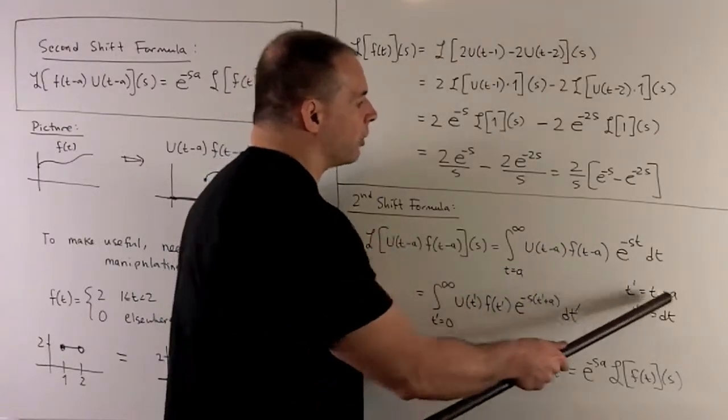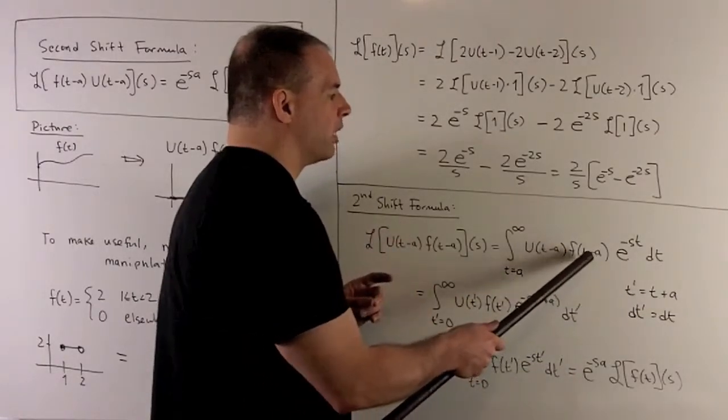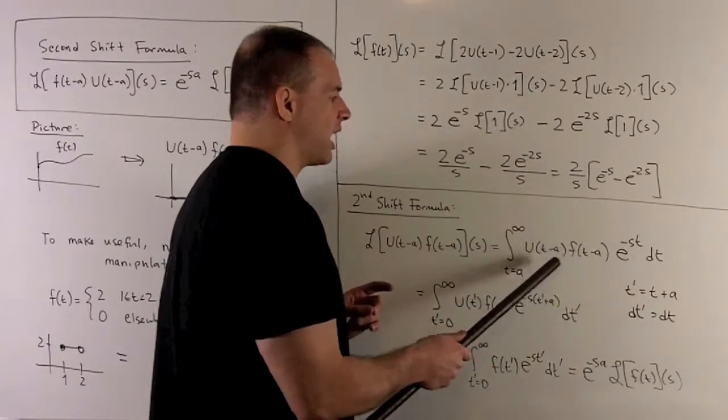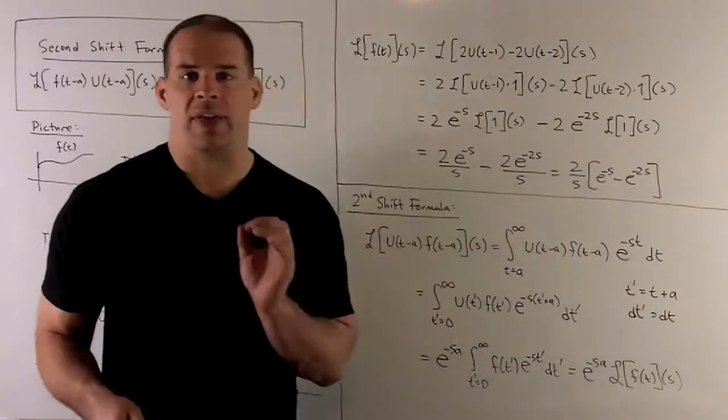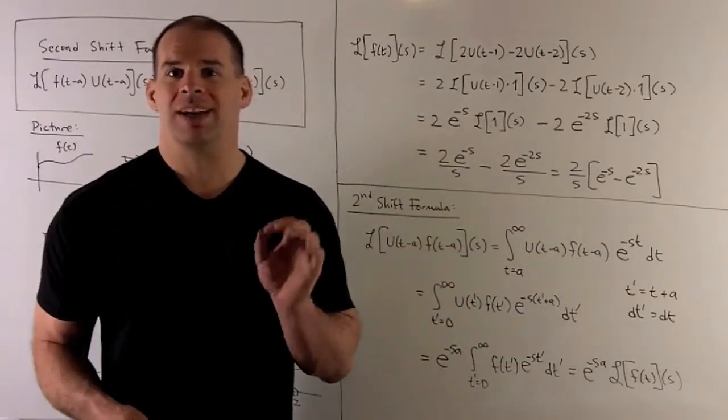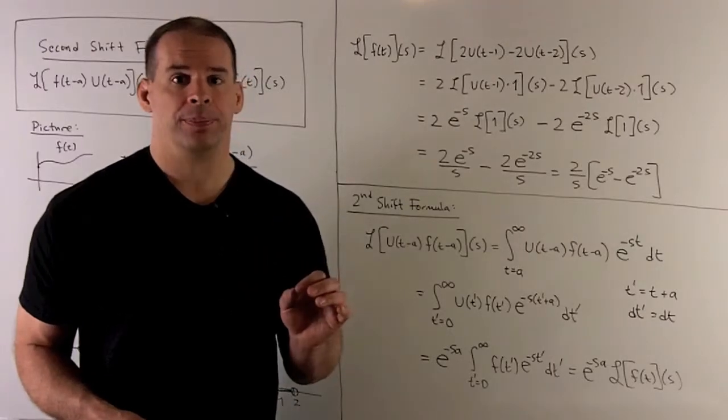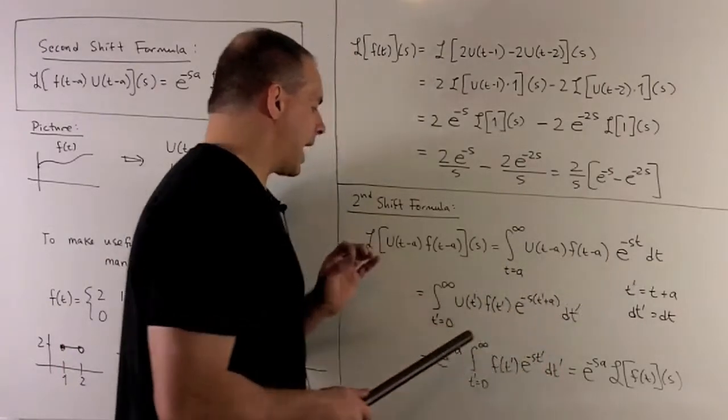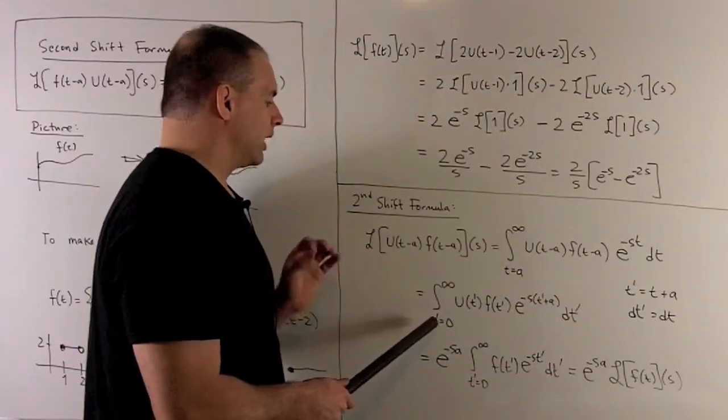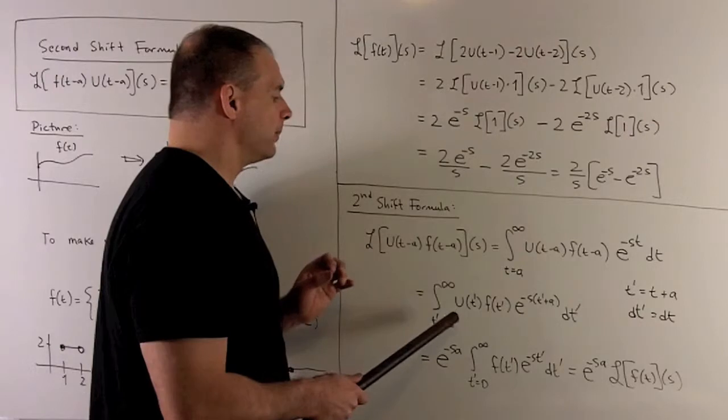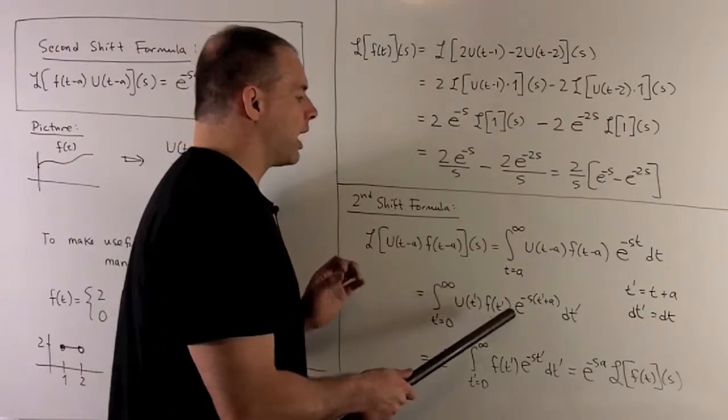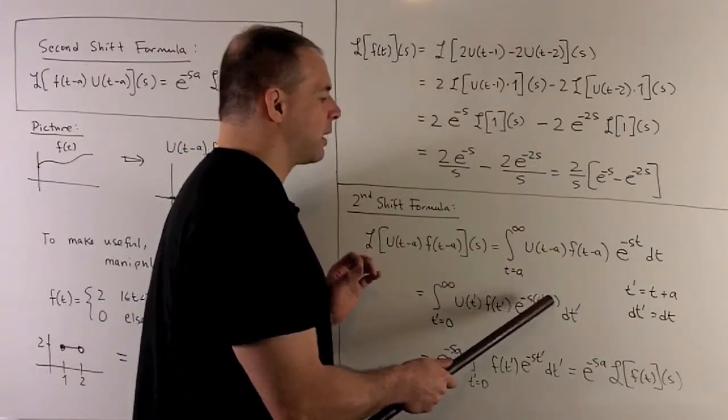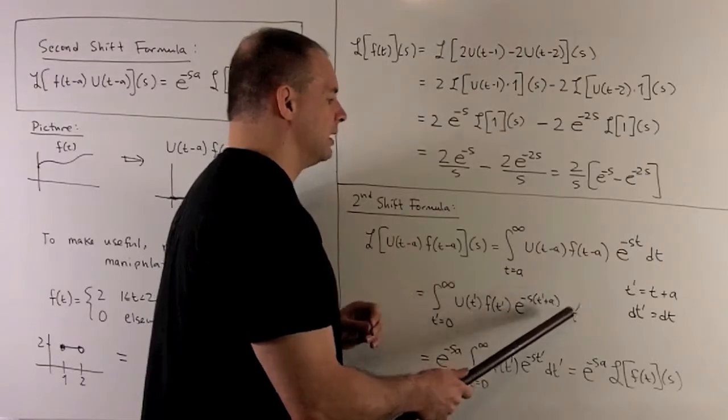Then we're going to do a change of variables. So the idea is I want to get rid of these minus a's inside of our functions. I do that by letting t prime be equal to t plus a. dt prime is going to be equal to dt. So when we do our change of variable, what happens? We'll be left with, okay, t prime goes from zero to infinity. We have ut prime, ft prime, e to the minus s, t prime plus a in parentheses, dt prime.